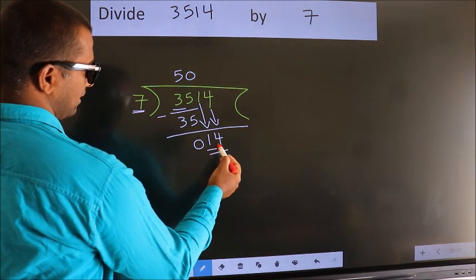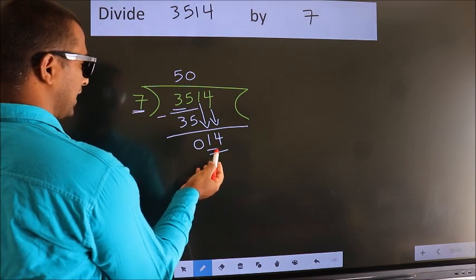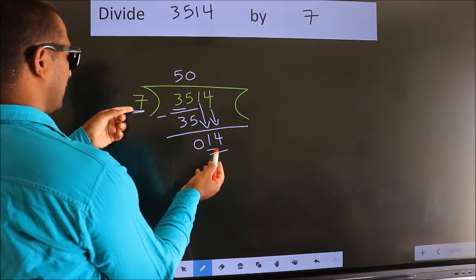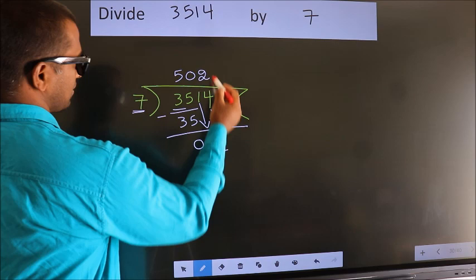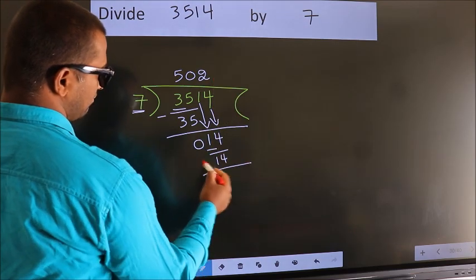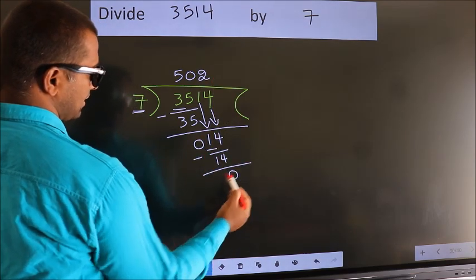So 14. When do we get 14? In 7 table. 7 2s 14. Now we subtract. We get 0.